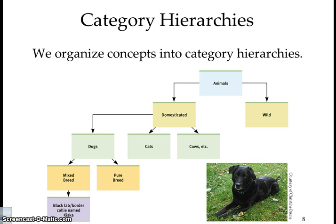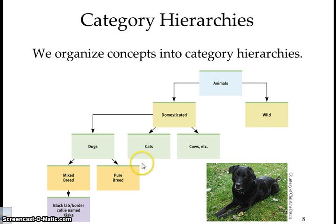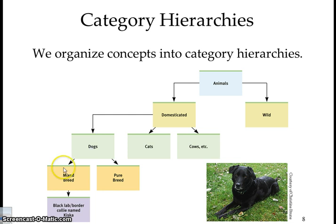We organize concepts into category hierarchies. When we look at 'animal,' we can look at domesticated — something that sits in our home — and wild. Under domestic, we look at cows, cats, and dogs. Dogs do come in the house, and we have different kinds of dogs.